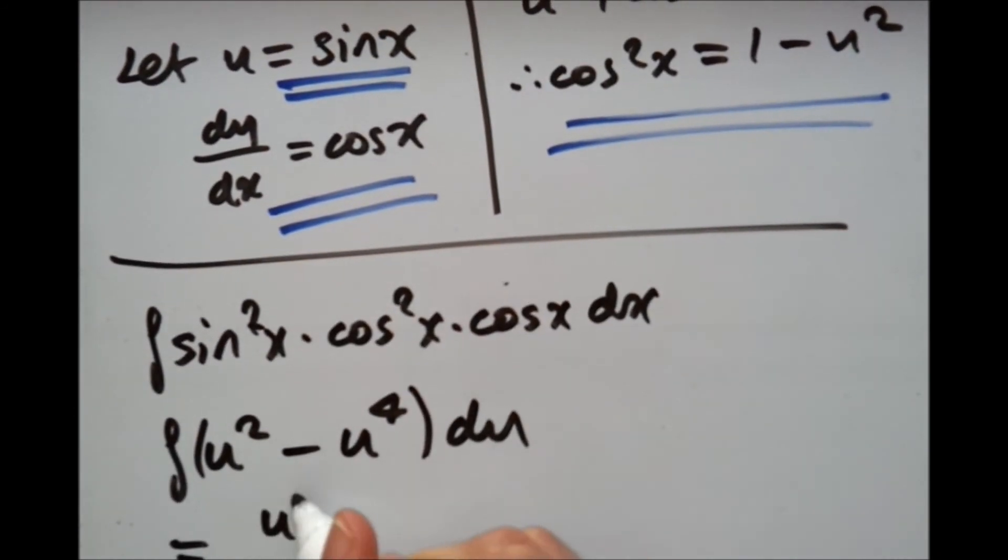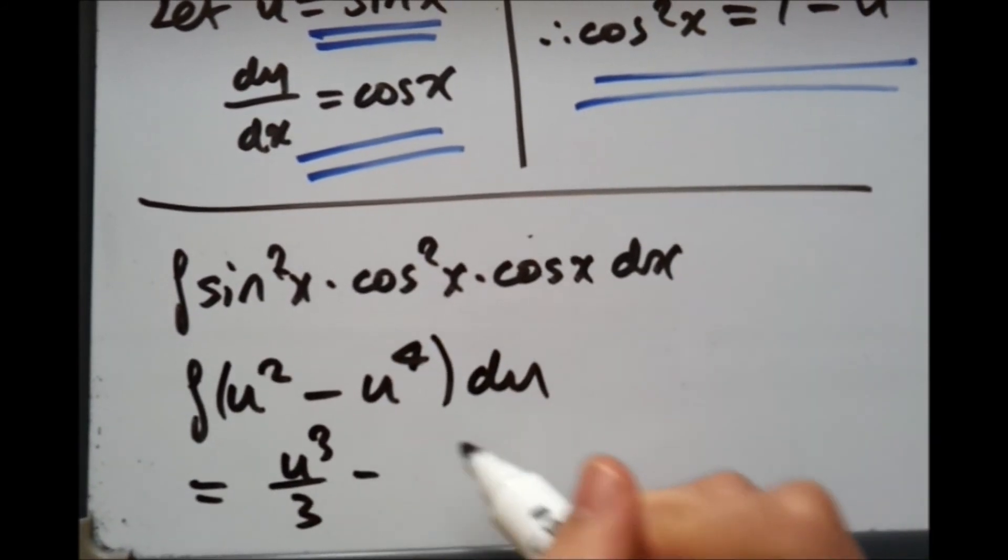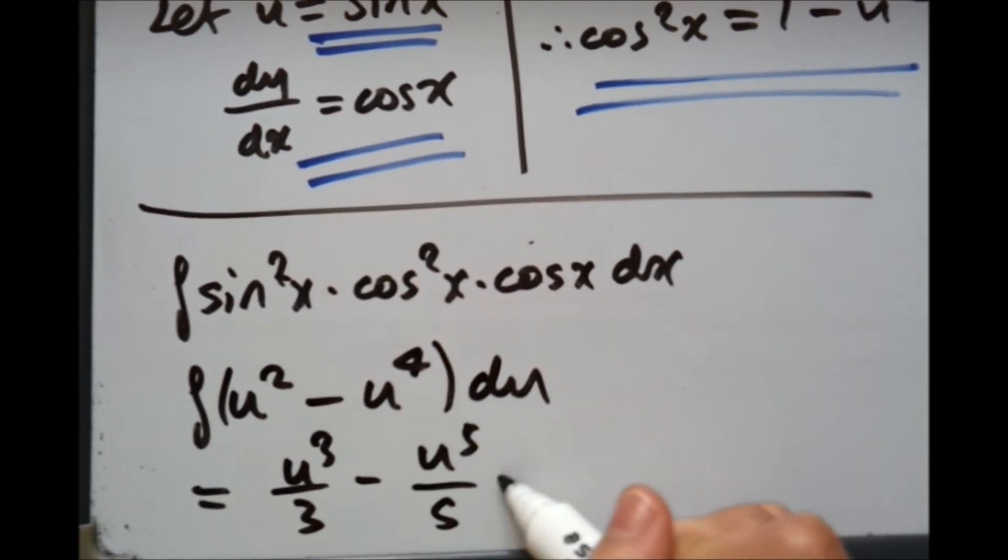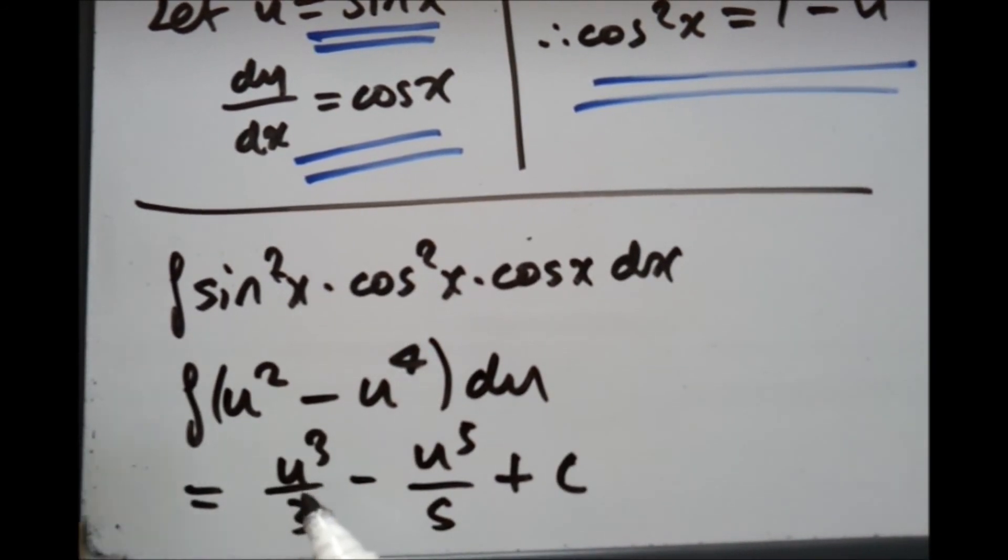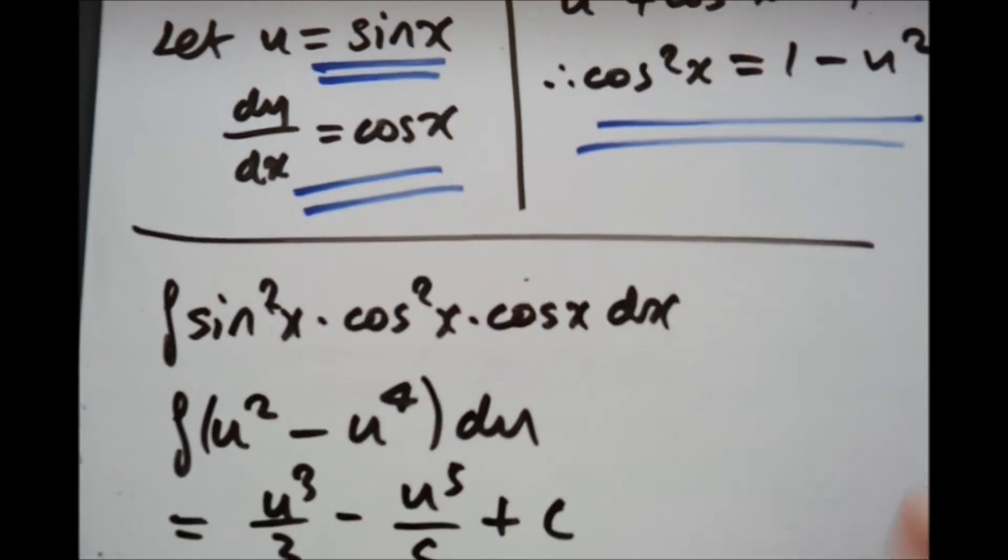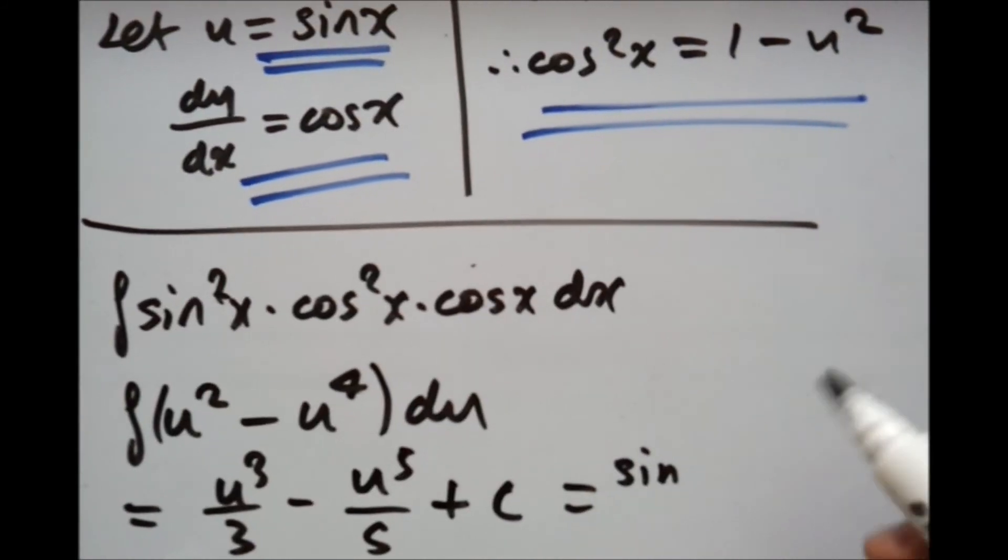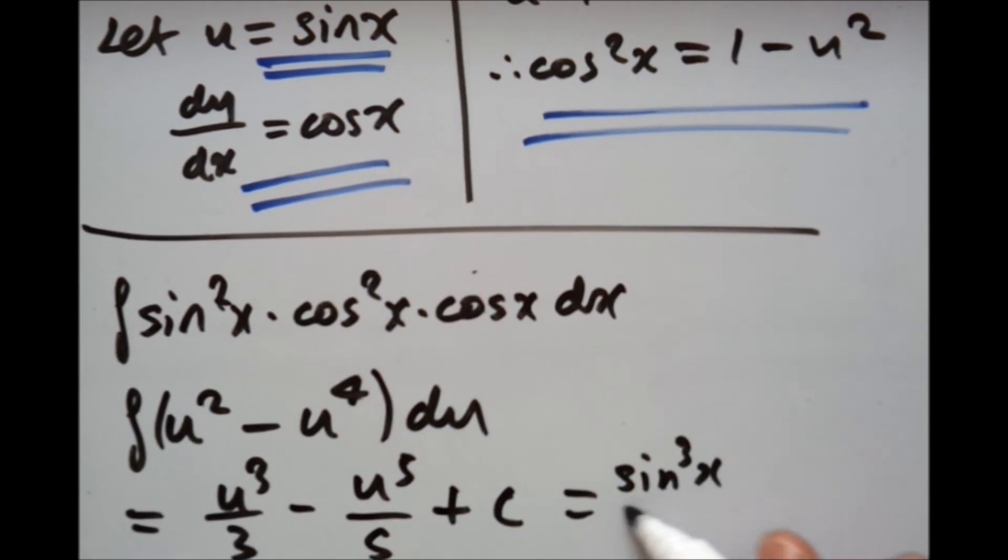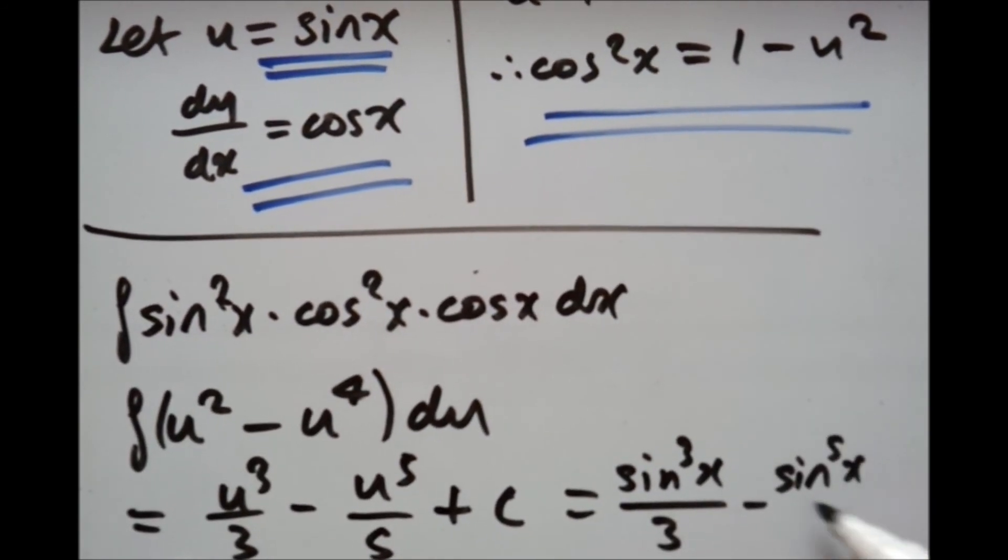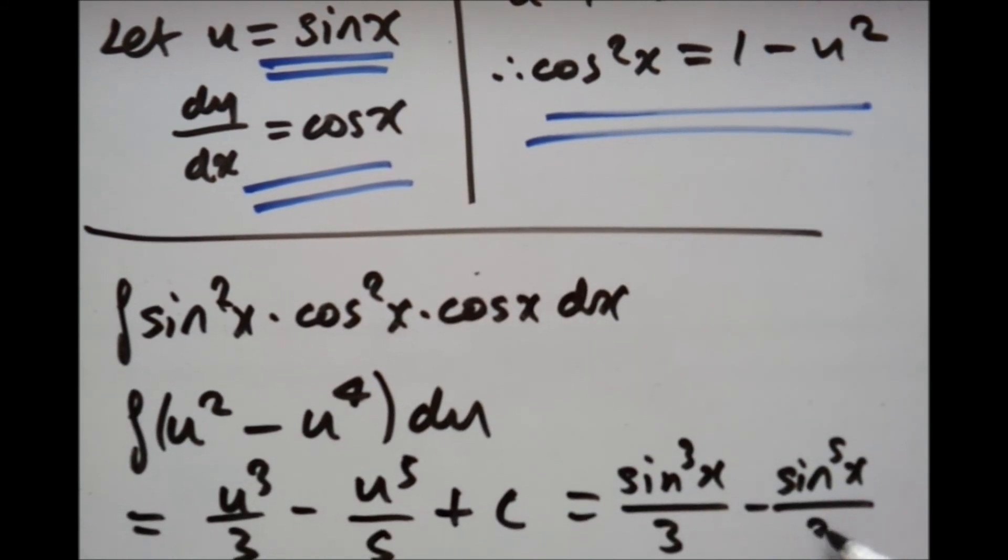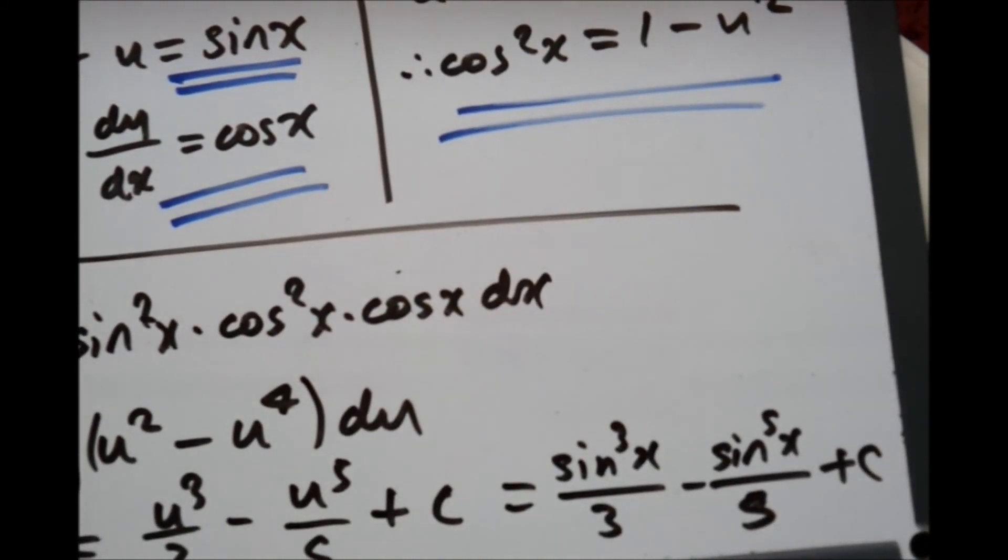And obviously if we just replace, substitute the sine x back in, we should ultimately have sine cube x over 3 minus sine power of 5x over 5. And don't forget a little plus C here.